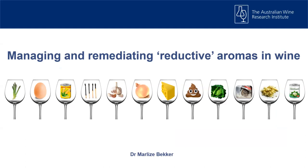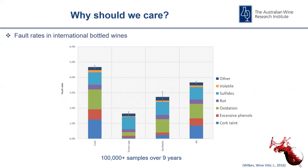Thank you Michael for the kind introduction, and good morning everyone. Today I'm going to talk about managing and remediating reductive aromas in wine. So why should we care at all? I really like this slide because it's a great summary of the faults and taints that we face in our wines. This graph represents over a hundred thousand samples submitted to the International Wine Challenge, a big wine show in London, over the past nine years. All the results have been collated, summarizing faults and taints grouped according to their closure types.